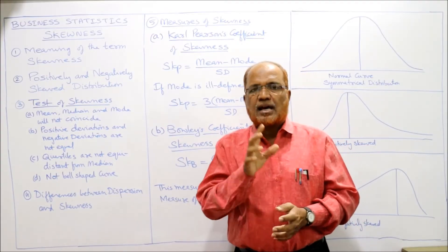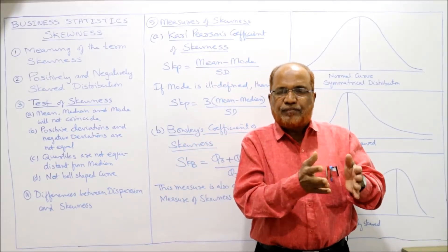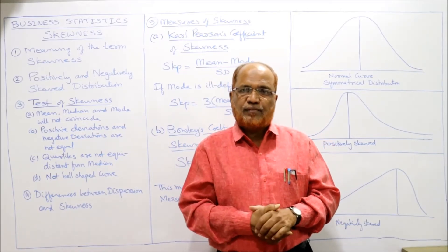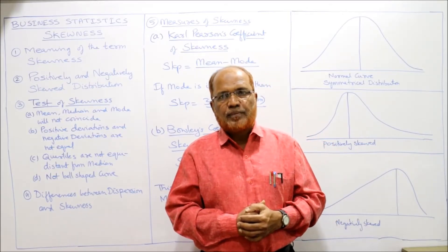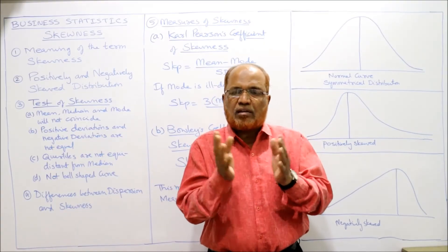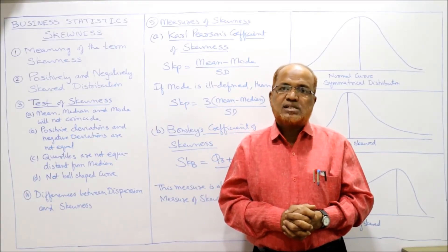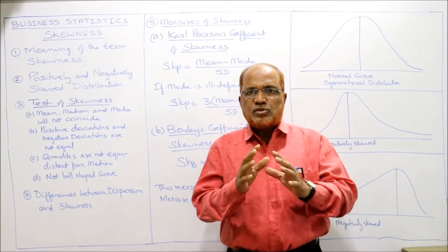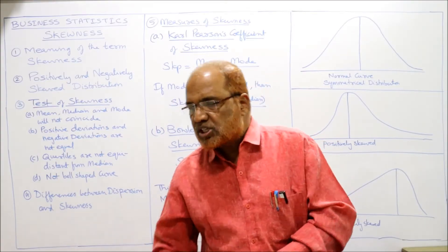In real practice, if the average is 60, it may be possible that out of 50 students, 40 students got more than 60 marks and only 10 or 20 students got less than 60 marks. If equal numbers of values are not present to the left and right of the central value, we call it an asymmetrical or skewed distribution.